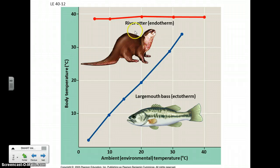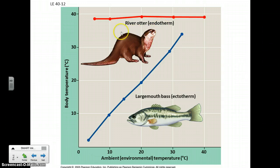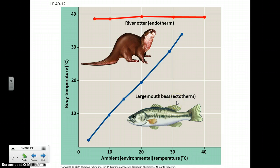Endotherms have a higher metabolism — an internal furnace, you might say — and they attempt as best they can to maintain stable conditions in spite of external conditions. So even in winter, a river otter will maintain a consistent temperature by speeding up its metabolism, generating more heat, and of course having fur to hold that heat in. Whereas a basic fish, an ectotherm, doesn't generate a whole lot of heat internally and their temperature is determined largely by their surroundings, so in wintertime the bass cools down and becomes less active.